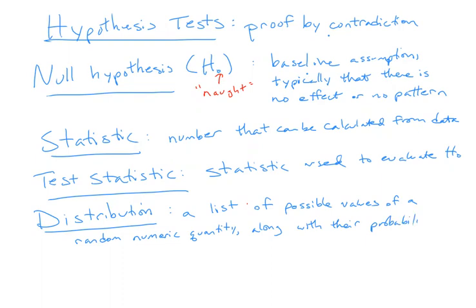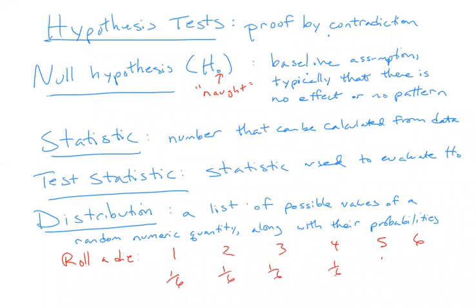For any random quantity, it's a list of all the numbers that quantity could be equal to, along with their probabilities. For example, if we roll a die, the possible numbers are 1, 2, 3, 4, 5, and 6. But this is not a distribution yet — this is just a list of the possible values. It's not a distribution until we also write down their probabilities. If I roll a die, the probability I get a 1 is 1/6, the probability I get a 2 is 1/6, and the probability of each number is 1/6. That whole thing is the distribution of the value that comes up when you roll a die. Similarly, if I flip a coin and call heads 1 and tails 0, the distribution is the list of possible outcomes — 1 and 0 — along with their probabilities, which are 1/2 and 1/2. That's what a distribution is.